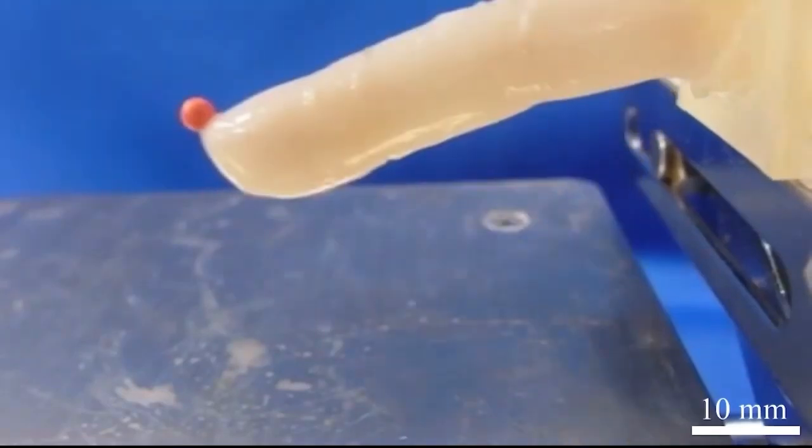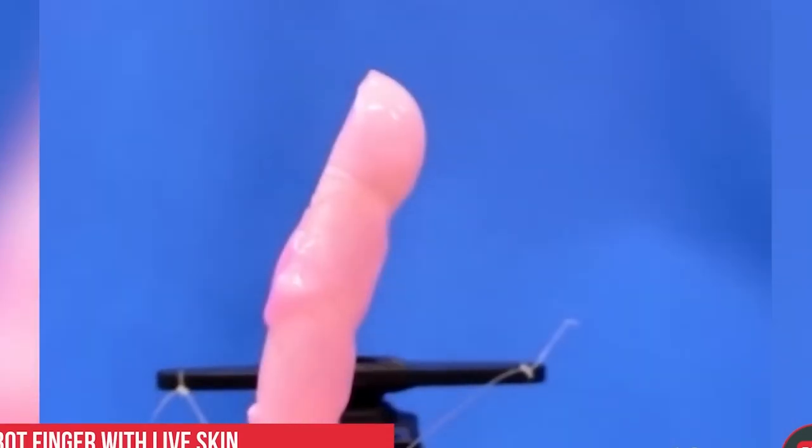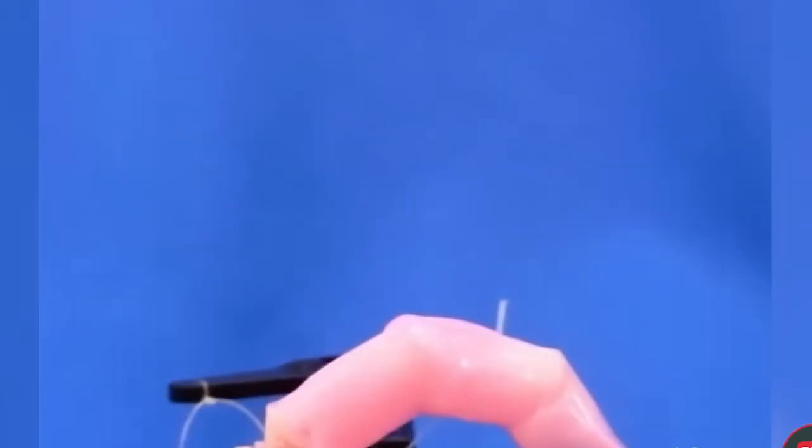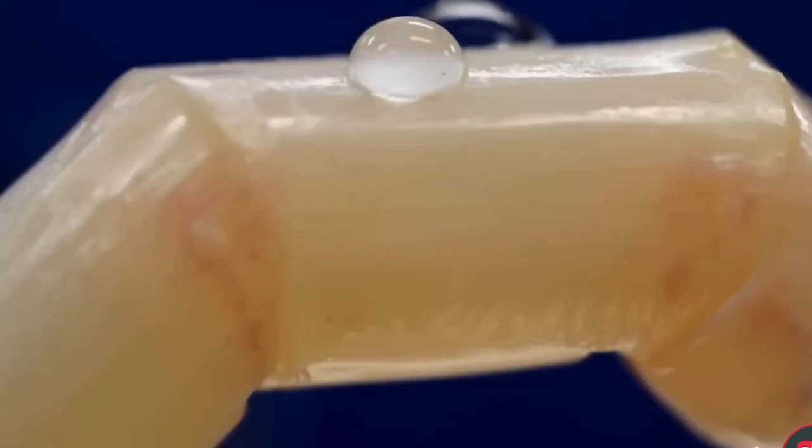One of the more difficult components of this research was growing skin directly on the robotic component. This required specifically constructed structures that could adhere the collagen fibers to them. But it was worthwhile for the aforementioned advantages.